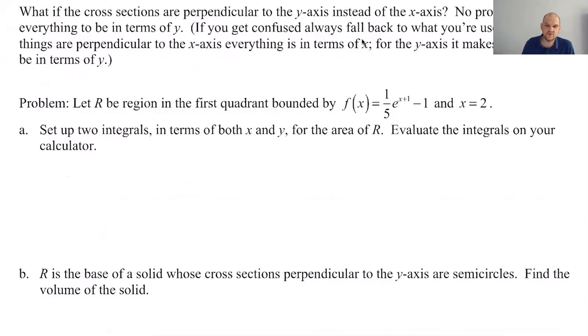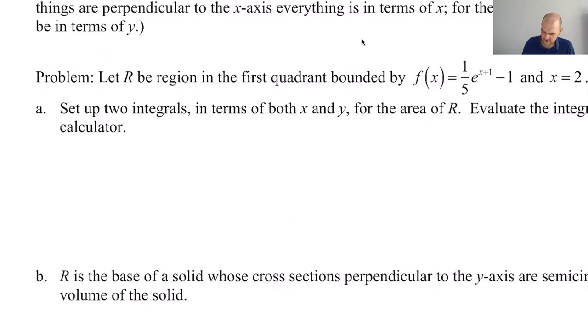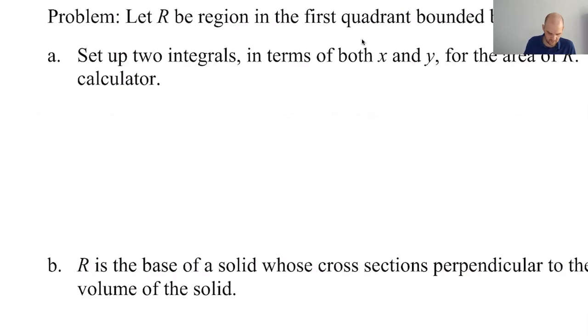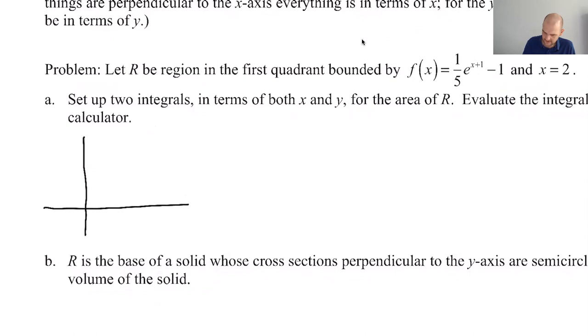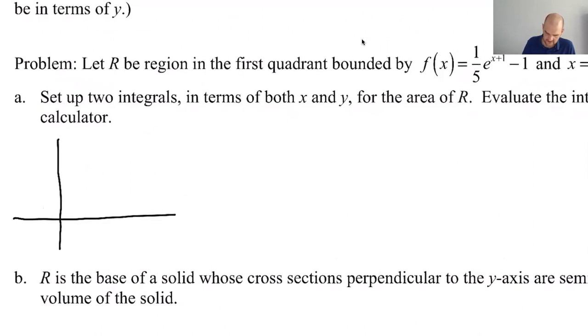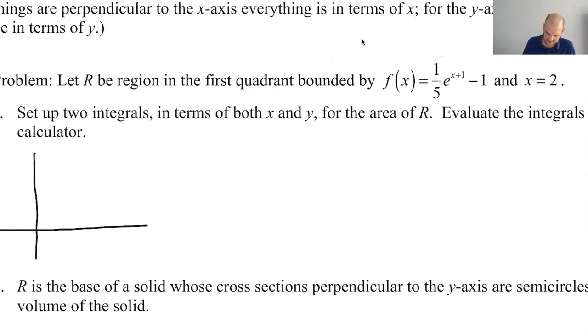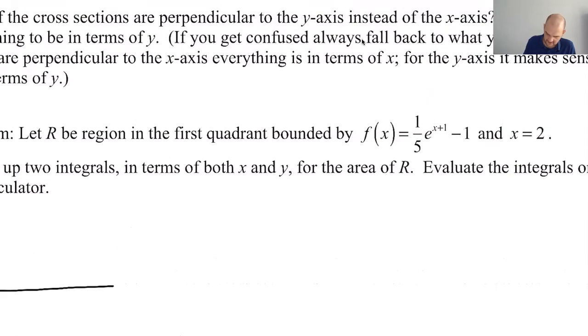Set up two integrals in terms of both x and y for the area of R evaluated with a calculator. All right, so do I need to figure this out? I think I do. If x is 0, I get e over 5 minus 1. That's negative. What does this look like? So if x is equal to 0, I get, like I said, 1/5 e minus 1. That's definitely negative. So what is the intercept of this thing?